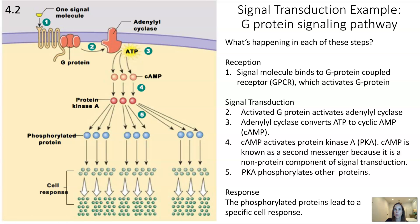The final step, although it doesn't have a number on this diagram, is response — the final step of the signal transduction pathway. This diagram keeps it vague; we can't really tell what the cellular response is, but the phosphorylated proteins lead to a specific cell response.